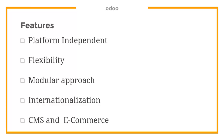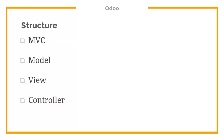Odoo also has support for CMS and e-commerce, which means that on the back end you will be running the open ERP business suite, but on the front end you will have a content management system and e-commerce. From the front end you can sell products and display your website, while on the back end you control all transactions, products, the CRM, accounting system, inventory system, and many other modules.